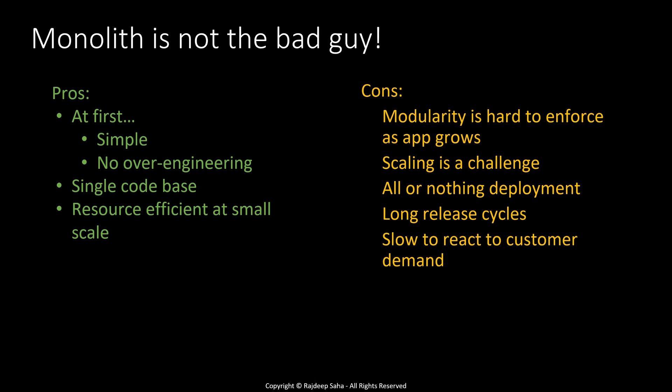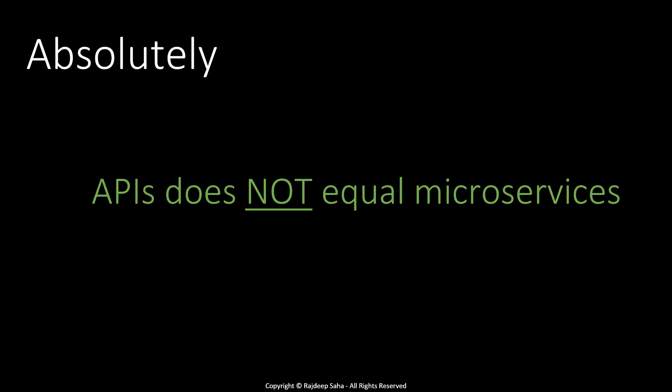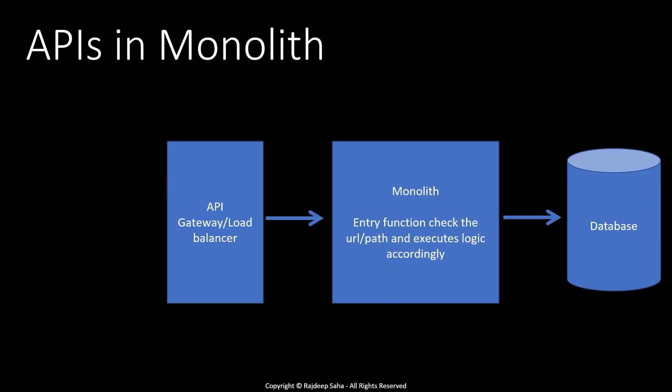Now let's address a very common misconception: can you use an API with a monolith? Absolutely. APIs have nothing to do with whether you use a monolith or microservices. Your monolith can be fronted by an API gateway or a load balancer. When different URLs or paths hit this API gateway or load balancer, they forward all these calls to the same monolith, which has an entry function or entry paragraph that checks the URL or path and invokes different functions within the monolith to execute the logic accordingly.